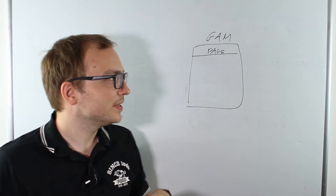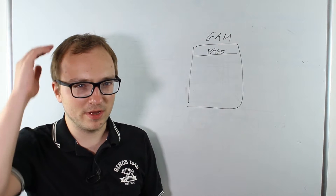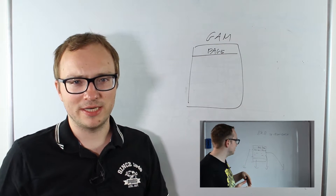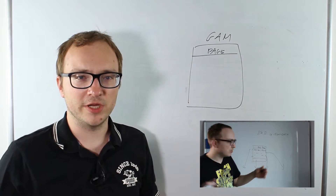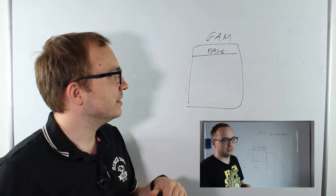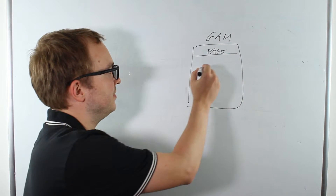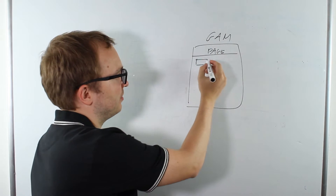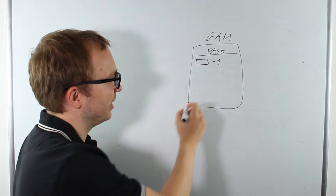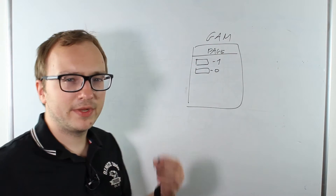The next page is the GAM page — the Global Allocation Map. It tells us whether an extent is allocated for the database or not. It does not distinguish per object. Unlike the IAM page where we have at least one per allocation unit per object, the GAM is for the whole database. It's simple: you have a list of extents, each encoded with zero or one — one means the extent is not allocated, zero means it is allocated.